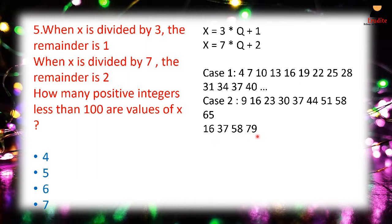Since they ask for values less than 100, we do not include 100. Therefore, there are exactly 4 values of x satisfying both conditions. Many people mistakenly choose 5 by including 100, so be careful. You could also solve this by setting 3q₁ + 1 = 7q₂ + 2 and checking values directly.